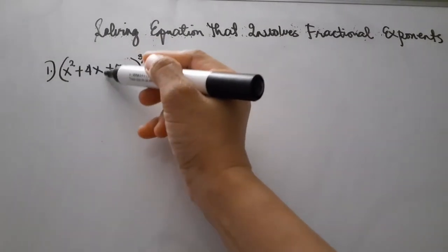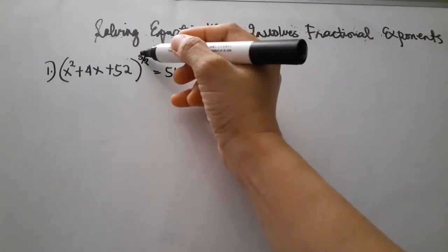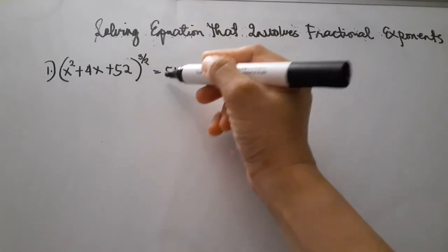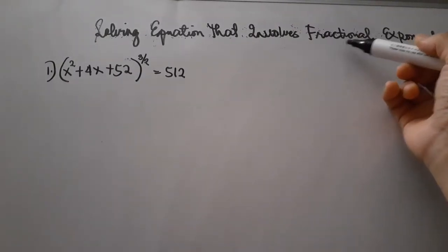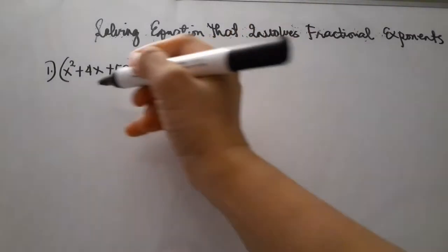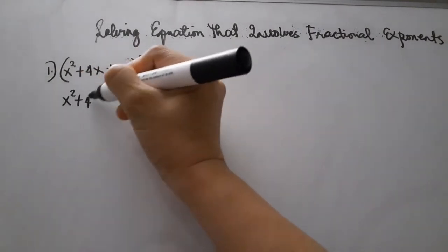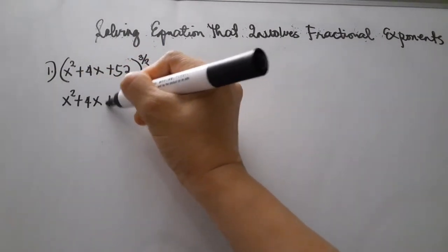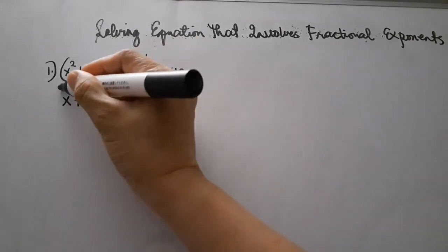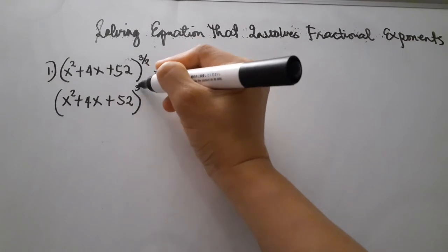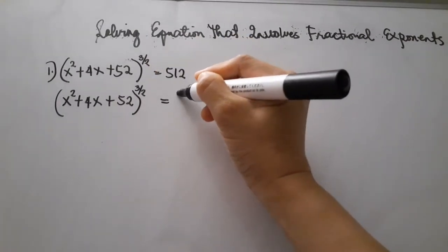Example number 1: x squared plus 4x plus 52, raised to the power of 3 halves, is equal to 512. To solve this one, we can raise both sides by the reciprocal of the exponent. So we have x squared plus 4x plus 52, raised to the power of 3 halves, is equal to 512.